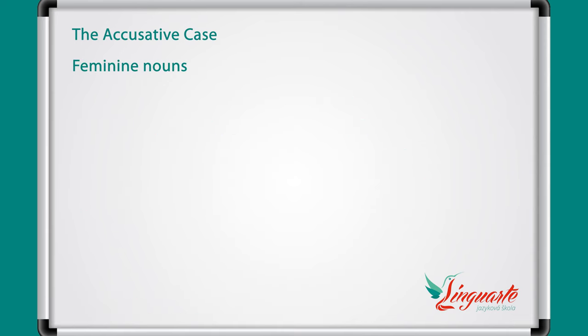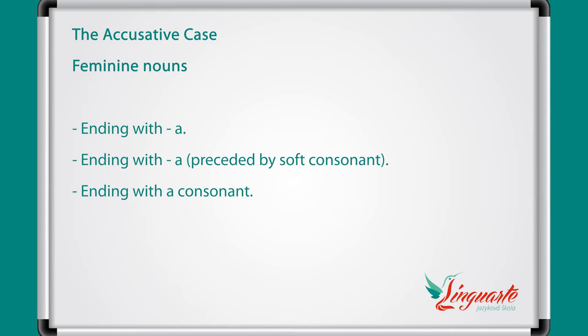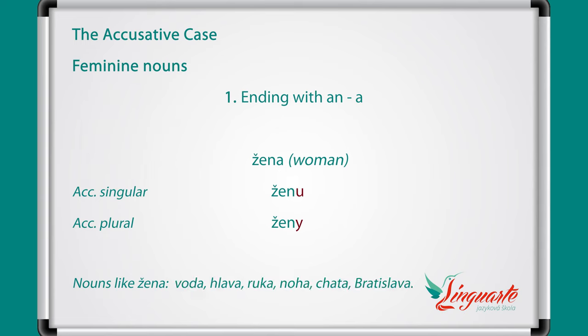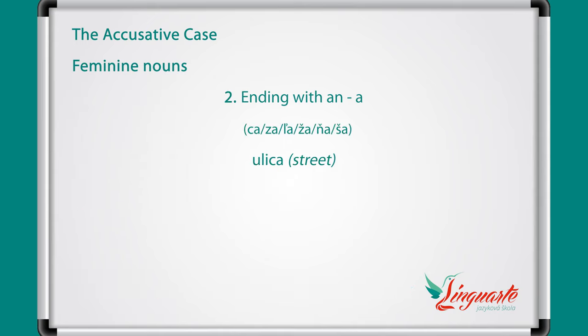The feminine nouns have these categories: nouns ending with a, nouns ending with a but preceded by a soft consonant, and nouns ending with a consonant. Let's start with the nouns ending in a, like žena. The accusative singular is ženu and plural is ženy. Other nouns like žena are voda, hlava, ruka, noha, chata, Bratislava.